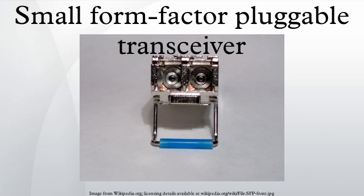The physical dimensions of the SFP transceiver are slightly smaller than the later XFP transceiver. The SFP MSA defines a 256-byte memory map in an EEPROM describing the transceiver's capabilities, standard interfaces, manufacturer, and other information, which is accessible over an I2C interface at the 8-bit address 1010000X.